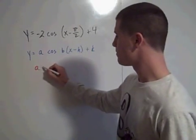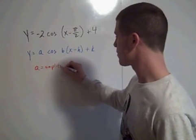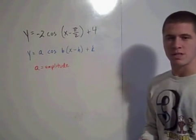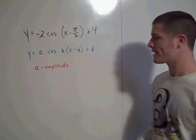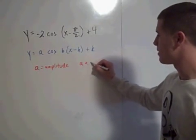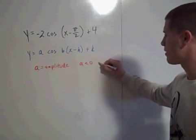So a is the amplitude, which is half of the distance from the maximum to the minimum. It's the distance from the x-axis to the maximum. So, if your a value is negative, then you have to reflect the graph over the line y equals k.